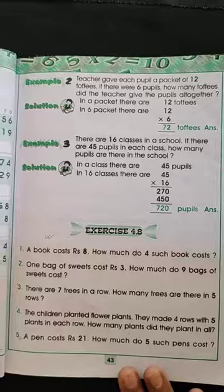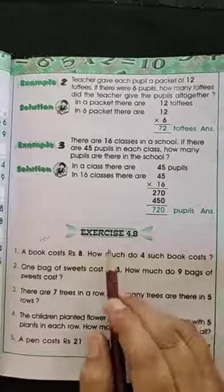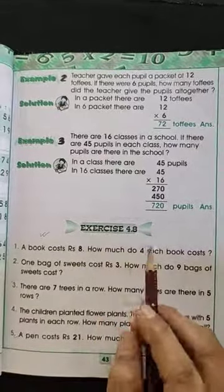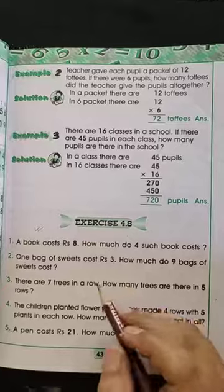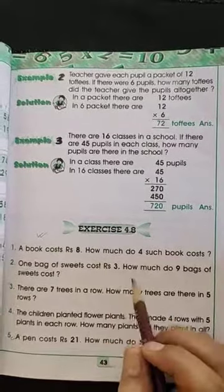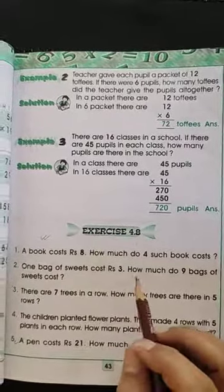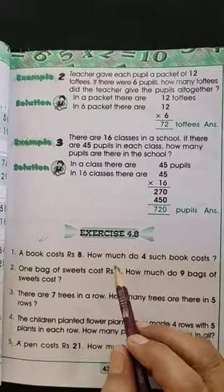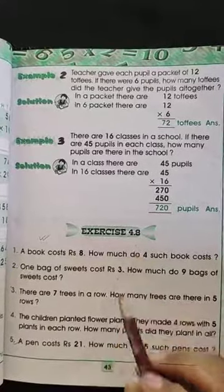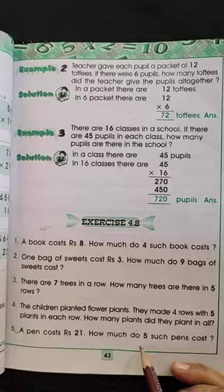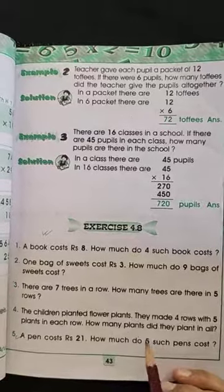Ok students, page number 43. Our new exercise is 4.8. Before I tell you that our last exercise was 4.7, we multiplied by multiply, and now our new exercise is 4.8. What is the word problem? Let's start the word problem.